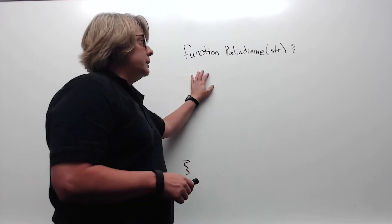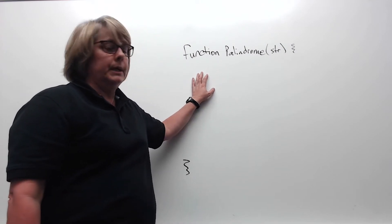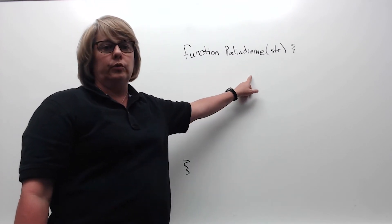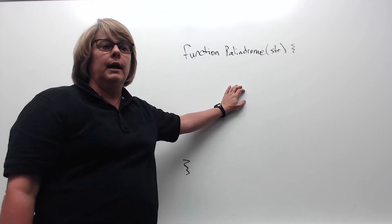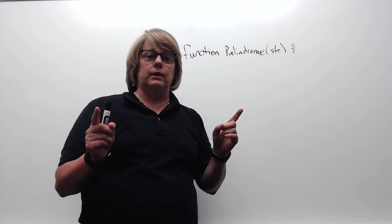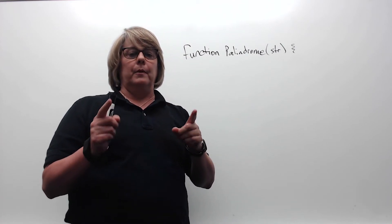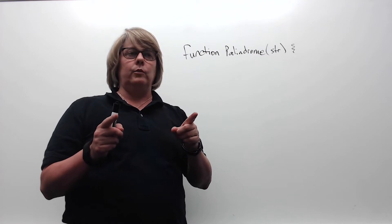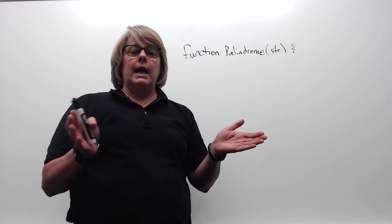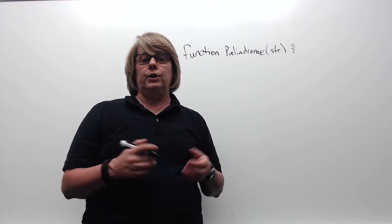There are multiple ways to solve this function. One of the most common ways I've seen people try is using a for loop — looping through each character in the string, comparing the first character to the last character, and if they're the same, continuing on. They compare from the front and the back, keep doing it until they meet at the middle, and if every character matches, you know that you have a palindrome.